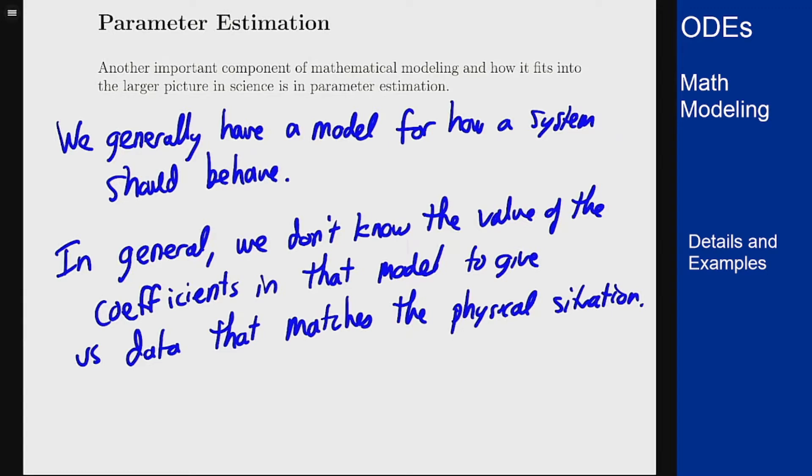The idea of parameter estimation is we know how the result should behave but we don't know a coefficient. If we get actual physical data as to what's happening in the real world, we can figure out the best value of these parameters so that the model fits really closely to the physical data we're seeing.